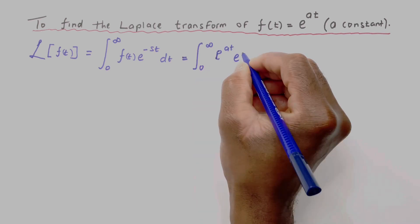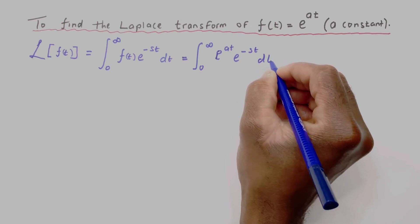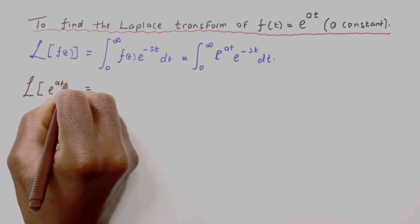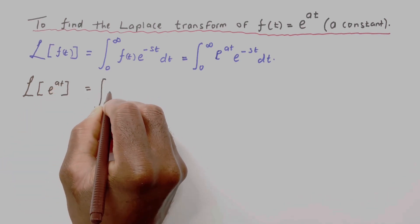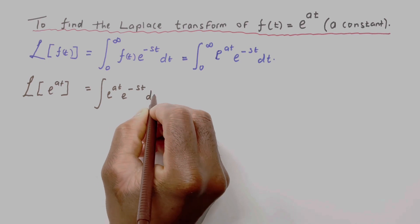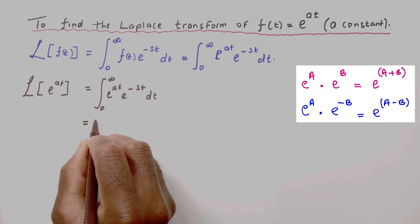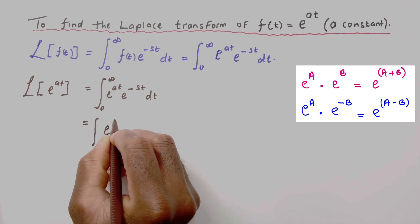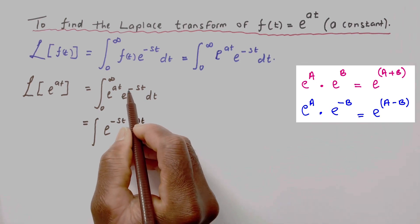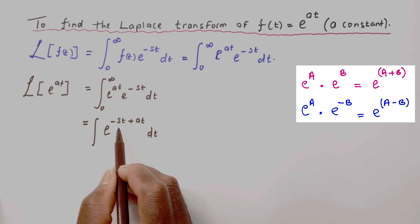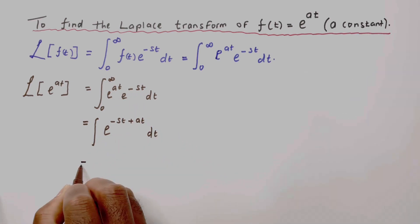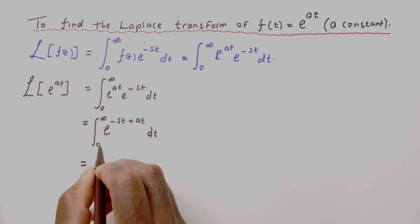So the Laplace of e to the power at equals the integral from zero to infinity of e to the power at times e to the power minus st dt. We simplify this by combining the exponents — same base, so we add the exponents — giving e to the power (minus st plus at), which we can write as e to the power (a minus s)t.